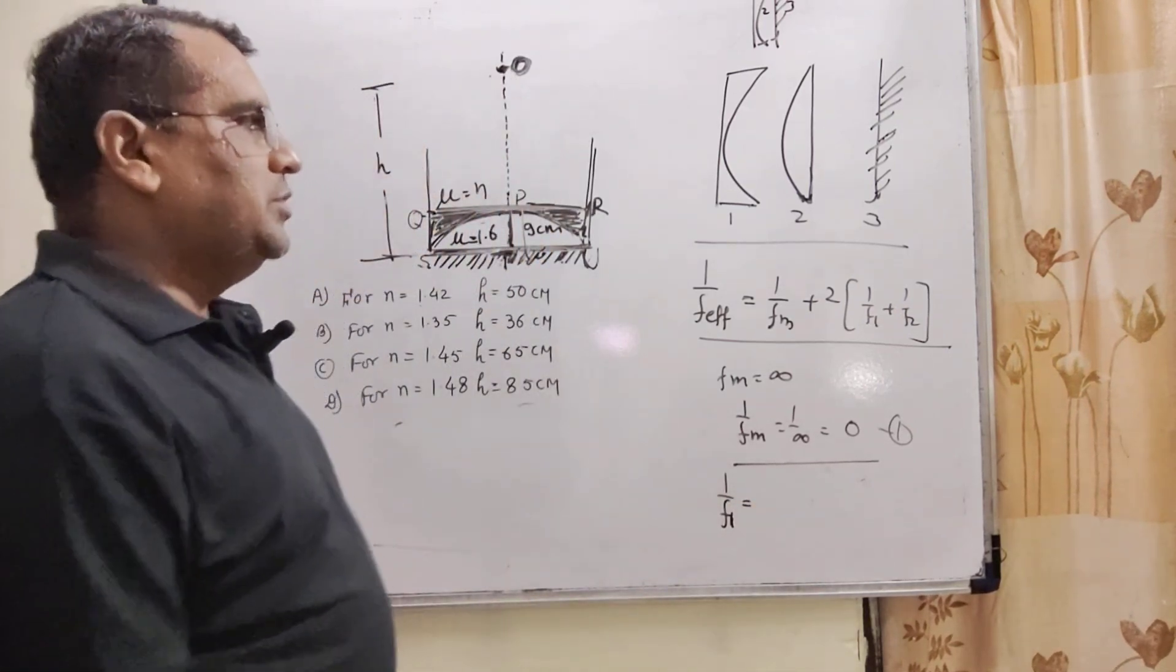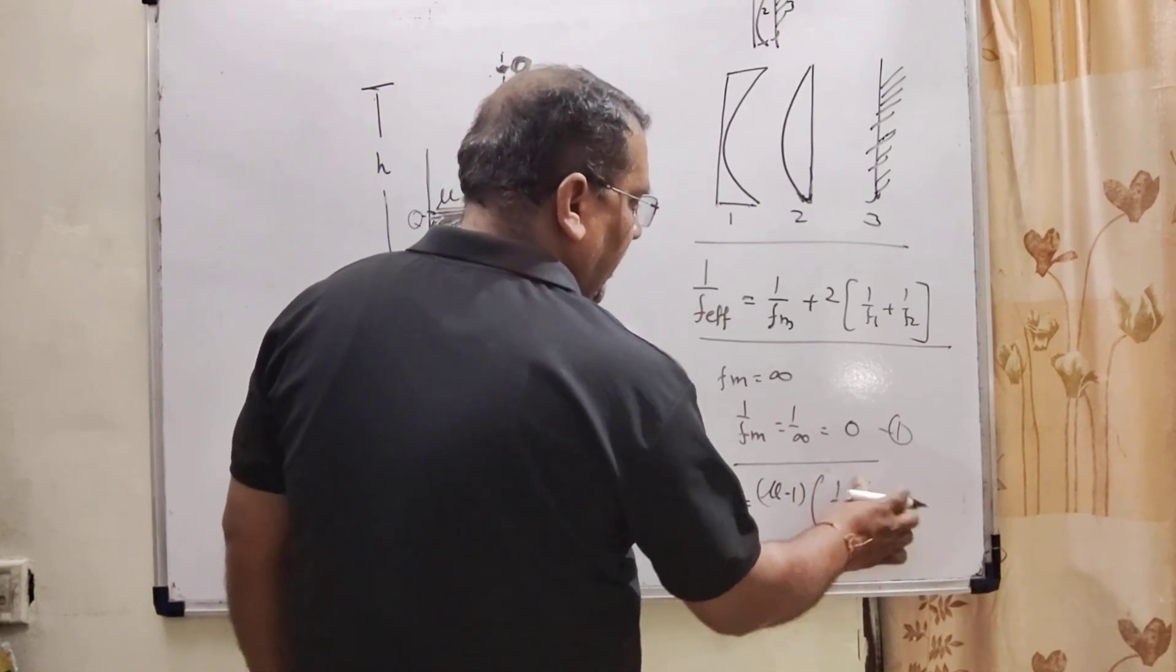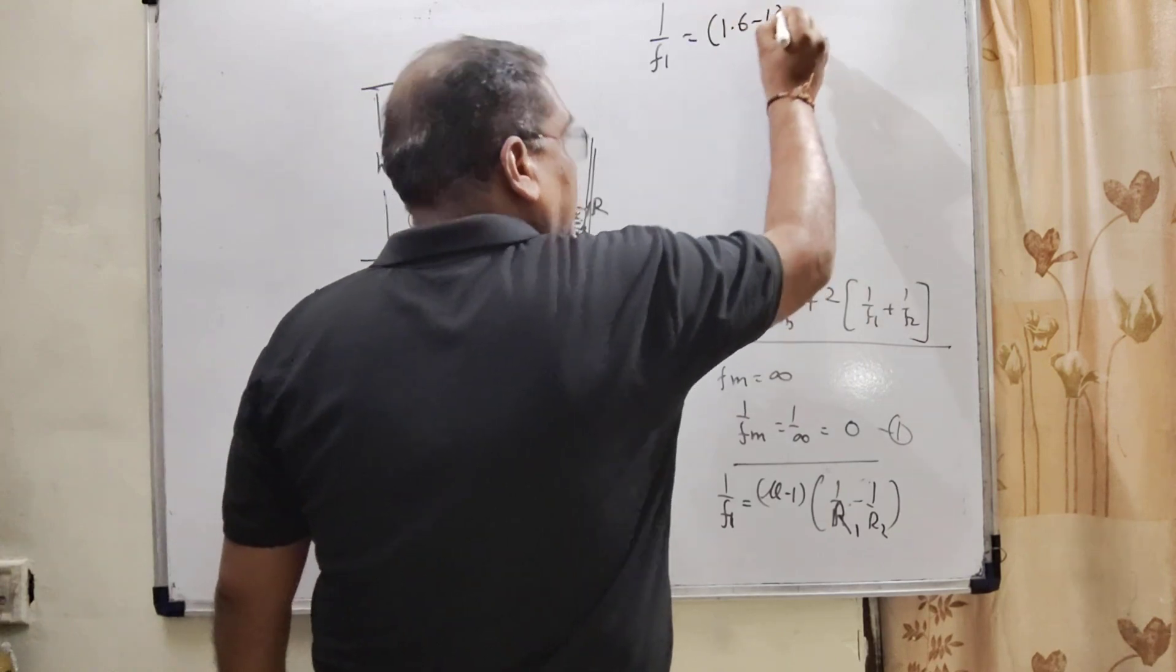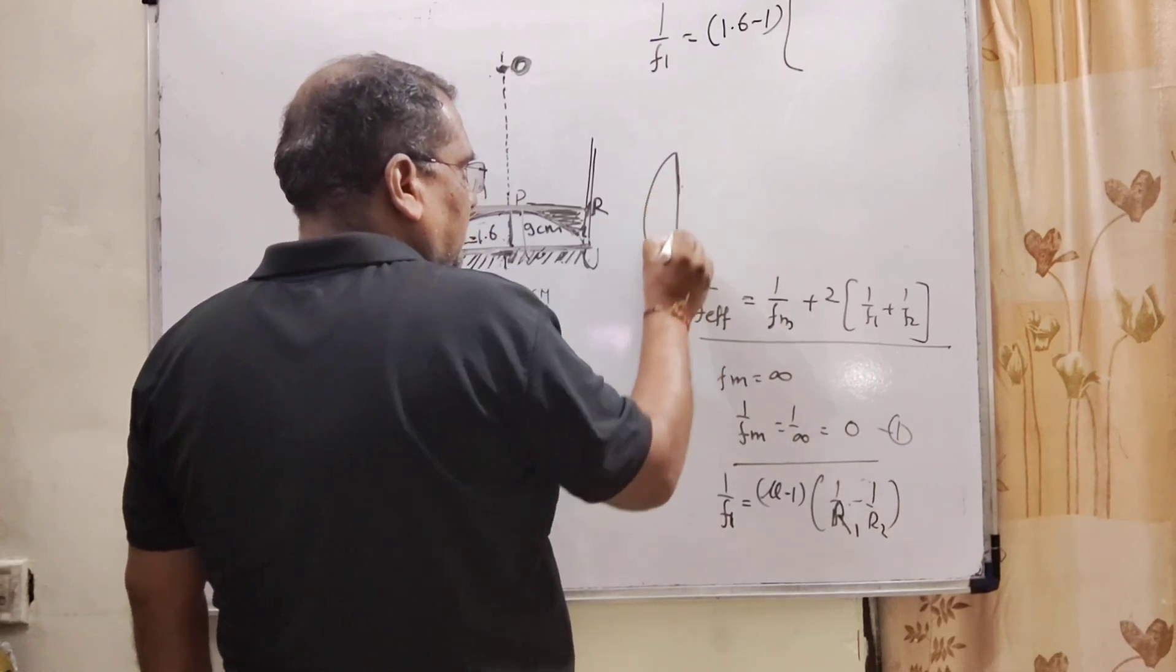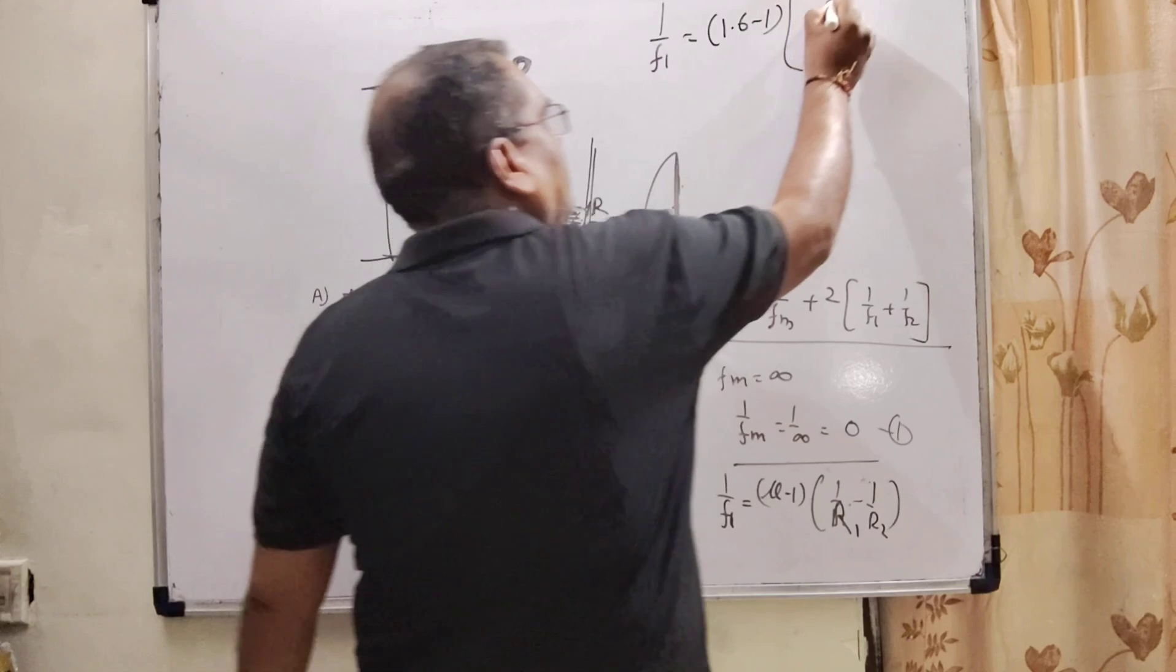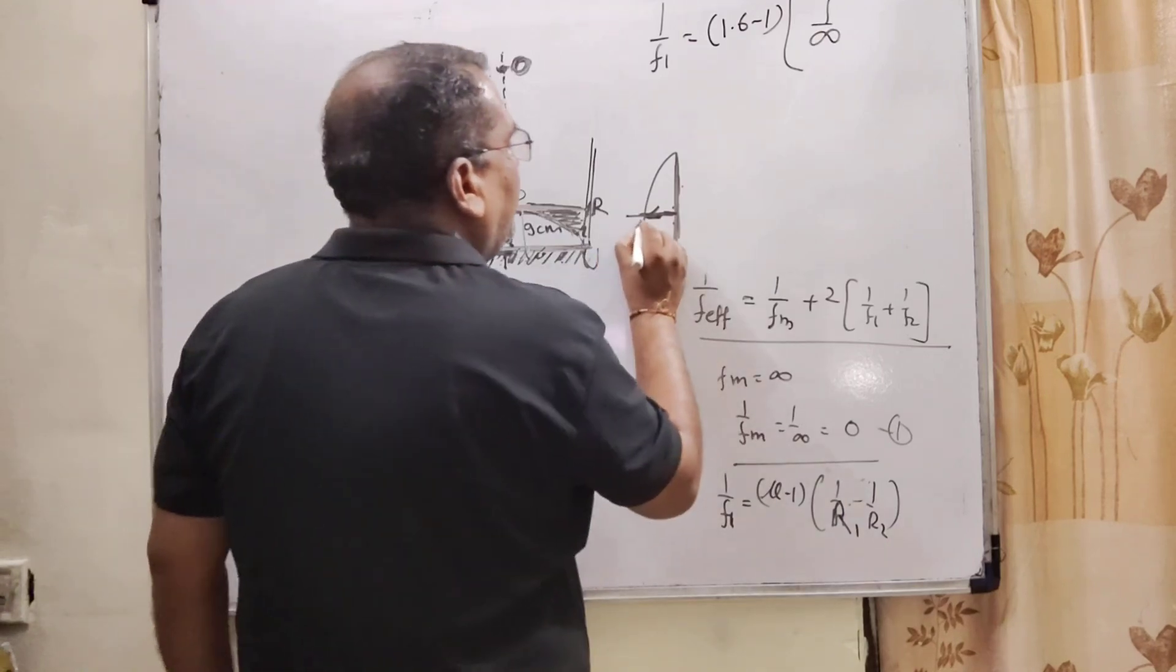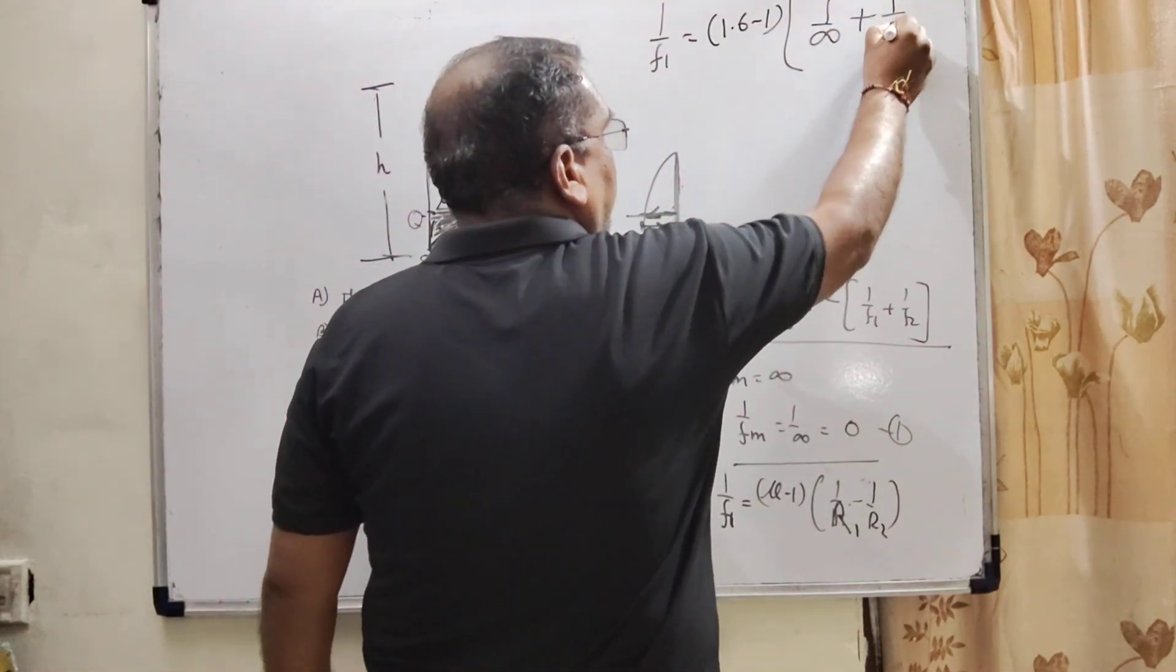We have to find out focal length. Firstly, for the mirror, the focal length of this plane mirror fm is infinity. So 1 by fm is 1 by infinity, which means 0. For the second, plano-convex, let us say f1. We have using lens maker formula: 1 by f1 equals mu minus 1 times 1 by r1 minus 1 by r2.